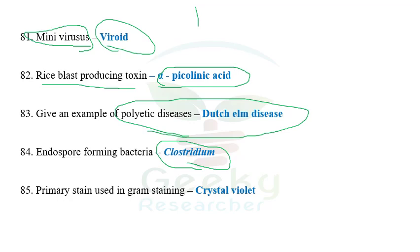To destroy endospores, the best approach is tyndallization for three consecutive days. The next question: primary strain used in Gram staining — crystal violet. The counter stain is safranin. Make sure you know: primary stain is crystal violet, counter stain is safranin, and there are other stains in the process as well. Please go through the Gram staining procedure thoroughly.